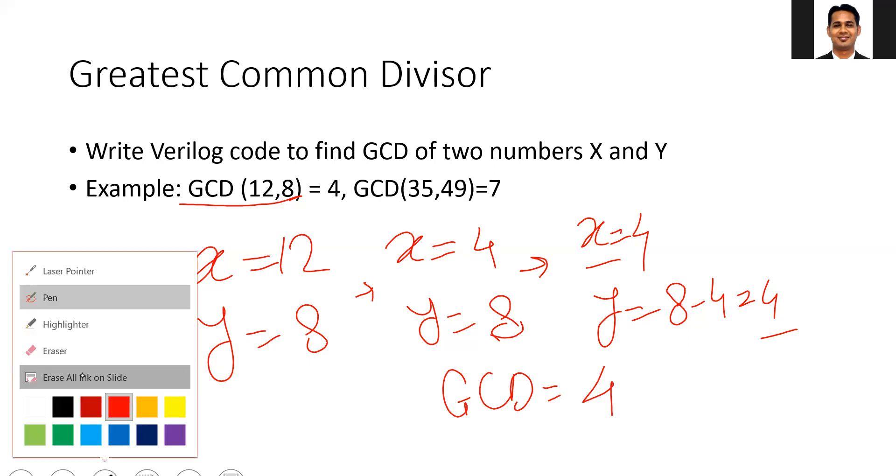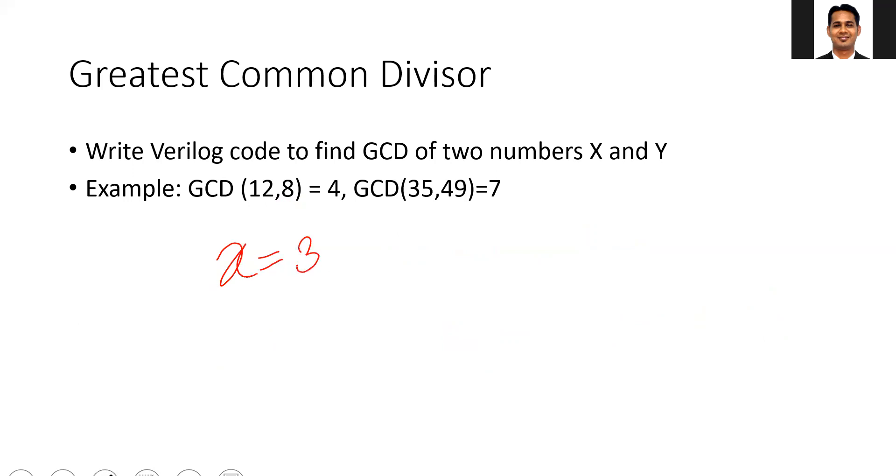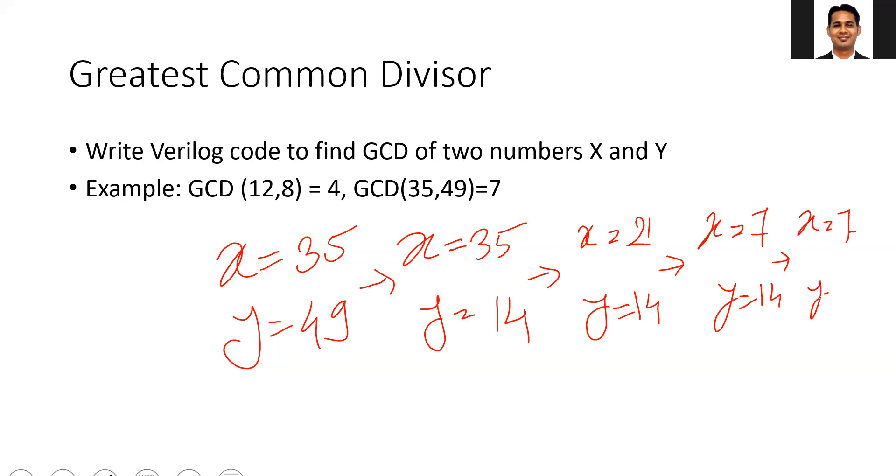The same process is repeated. We can repeat for another number, say x equals 35 and y equals 49. 49 minus 35 gives you 14. In the next stage, the smaller number remains 14 and x becomes 35 minus 14, that is 21. We continue with the next iteration. Here x equals 7 and y equals 14, and in the next iteration x equals 7 and y equals 7. Both numbers are equal, so your GCD is 7. This is how you calculate the GCD of any two numbers.